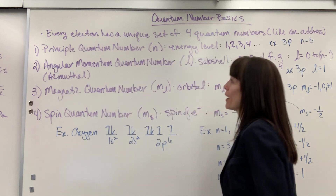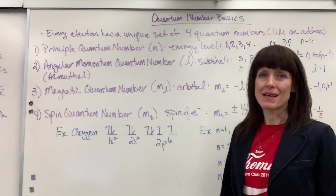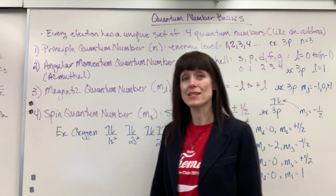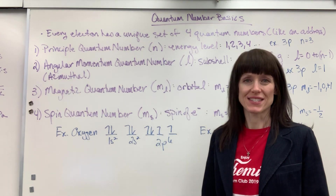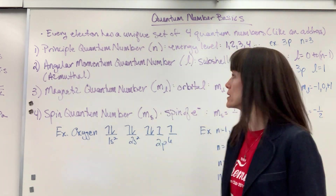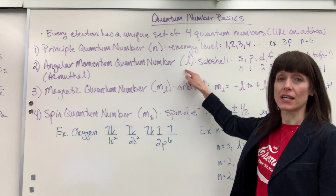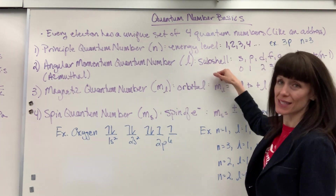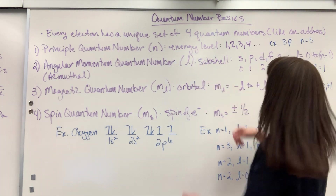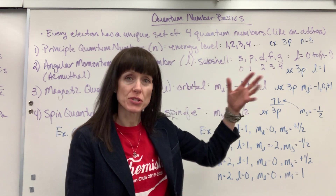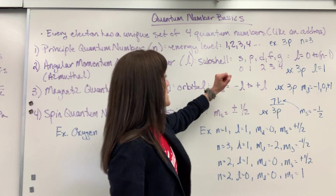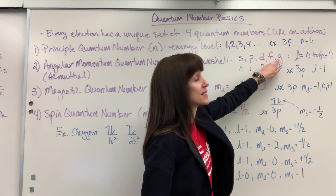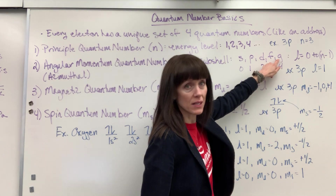Number two: the angular momentum quantum number. This also has another name called azimuthal, in case you see it. That's just the second quantum number. Its symbol is a cursive L, and this indicates subshells. We have our blocks — subshells — that's the same word: S, P, D, F. Here we start getting into the theoretical G.